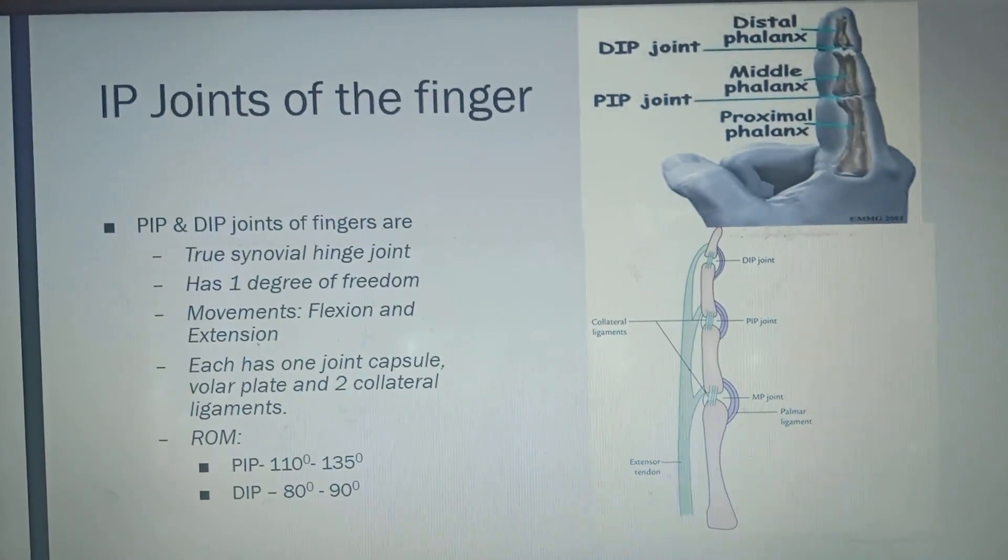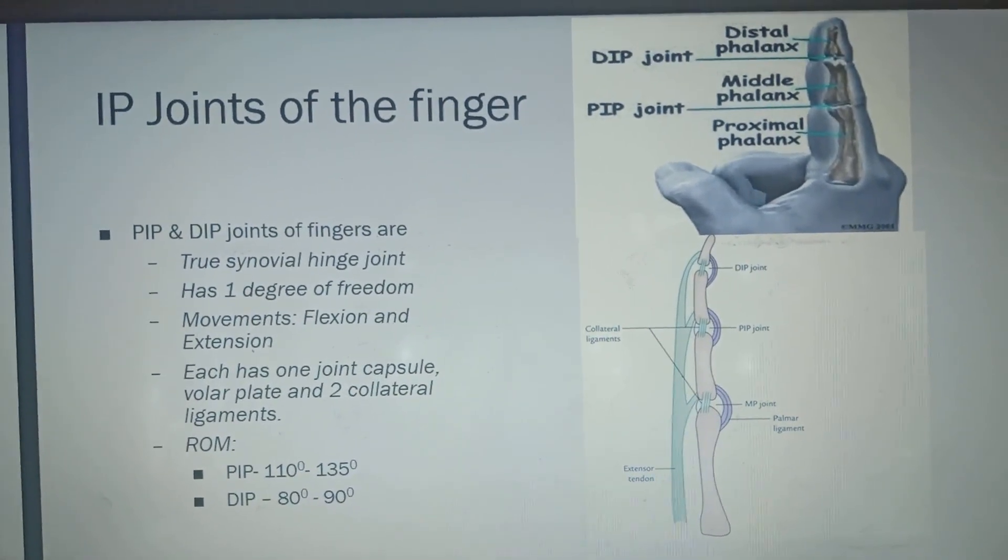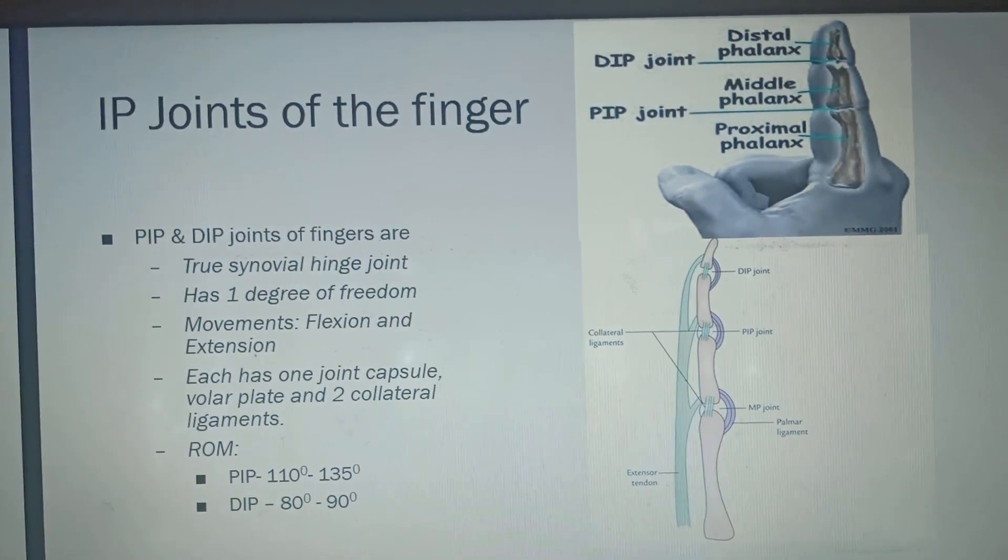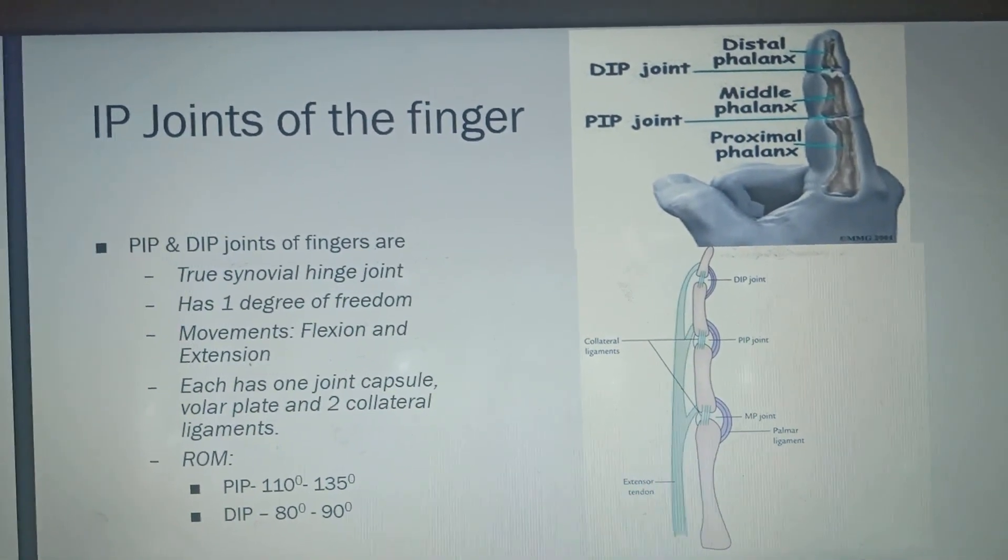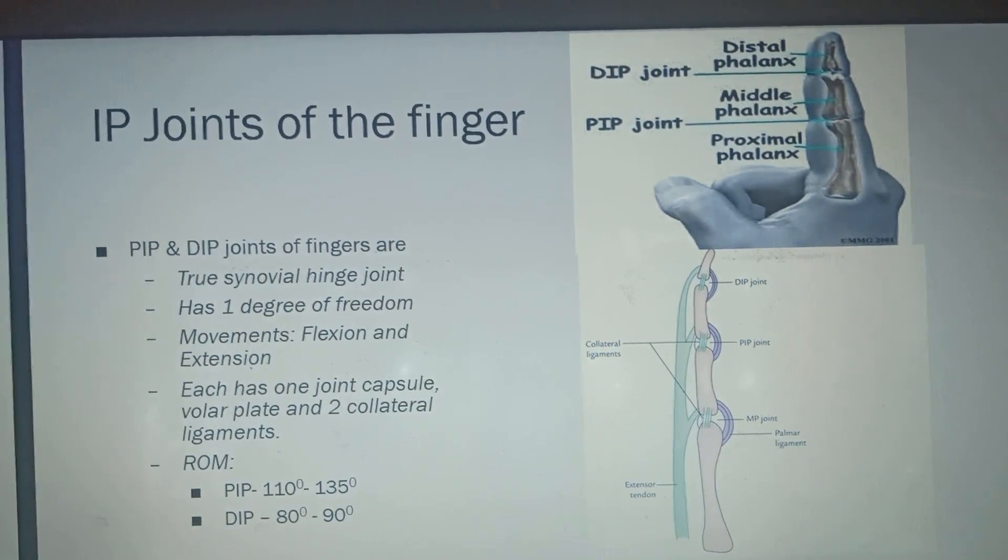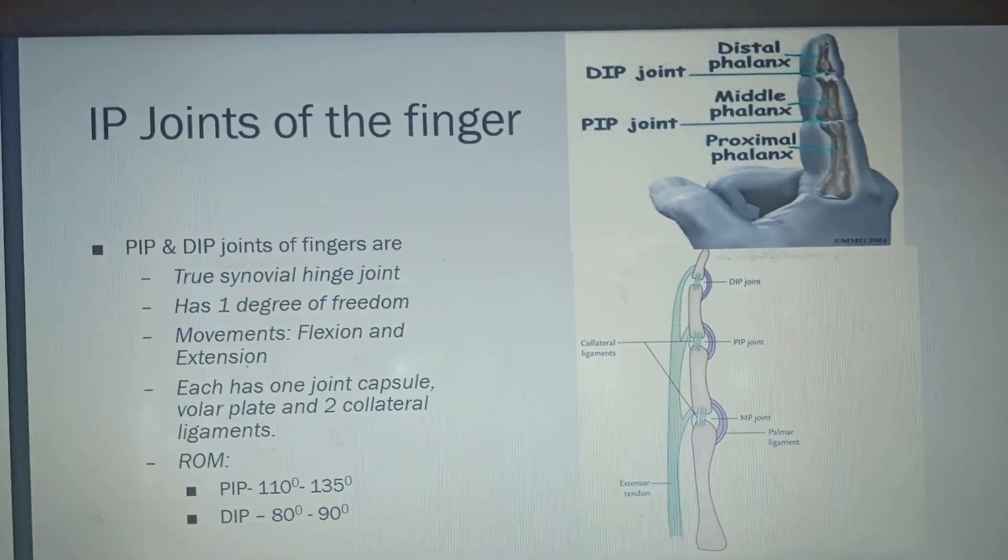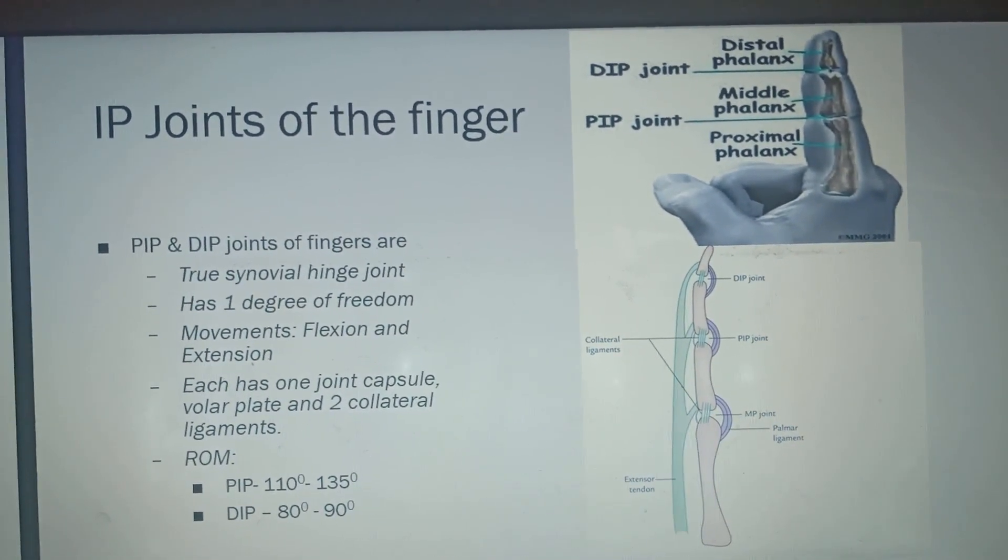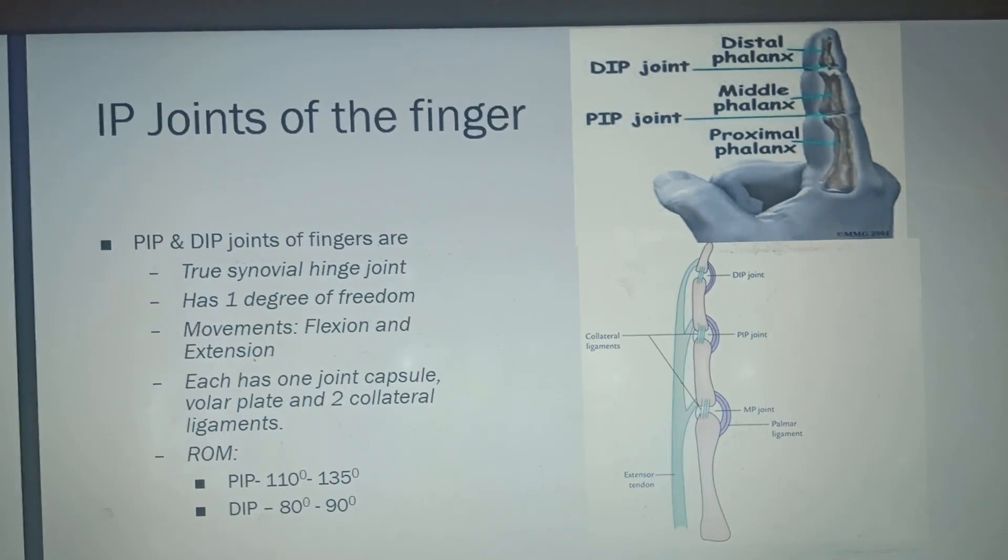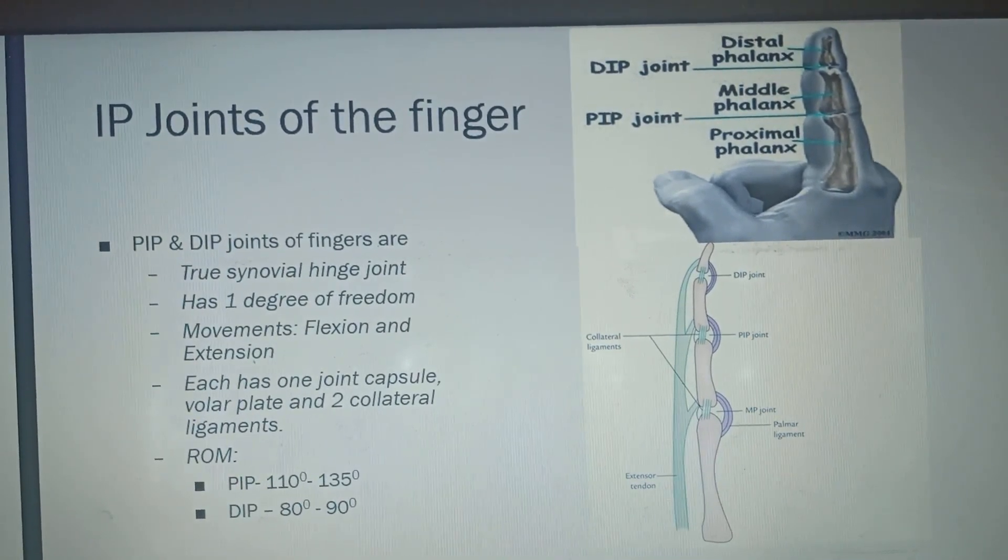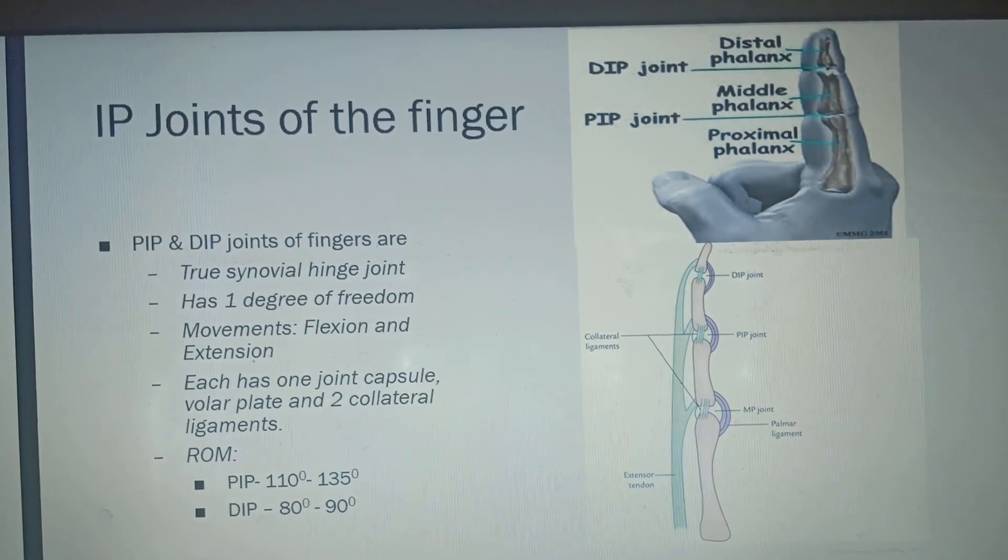Now IP joints of the finger. There are 2 joints: PIP and DIP, that means proximal interphalangeal joints and distal interphalangeal joints of the fingers. These are the true synovial joints. It has only 1 degree of freedom, that means the movements are flexion and extension.